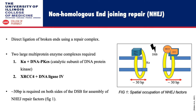In NHEJ there is direct ligation of the broken ends using a repair complex that consists of two large multi-protein enzyme complexes among other accessory proteins. The first large multi-protein enzyme complex is KU and DNA-PKcs, and the second is XRCC4 and DNA ligase 4. It is estimated that about 30 base pairs is required on both sides of the double strand break for assembly of NHEJ factors.